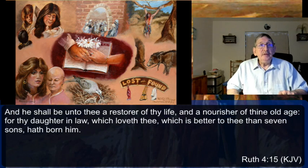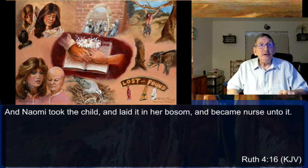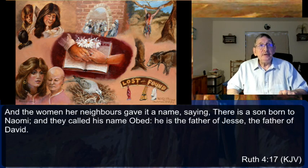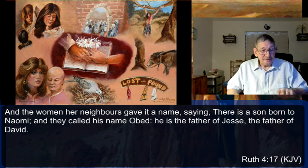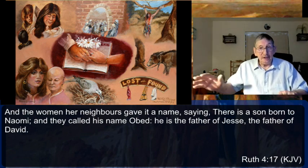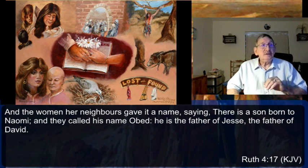'He shall be unto thee a restorer of thy life and nourisher of thine old age, for thy daughter-in-law which loveth thee, which is better to thee than seven sons, hath born him.' Naomi took the child and laid it on her bosom. The neighbors called his name Obed — he is the father of Jesse, the father of David. So three generations from David, whose genealogy leads all the way to Jesus Christ. It's only a four-chapter book and a great little read.